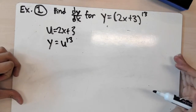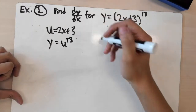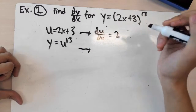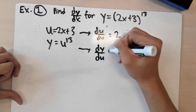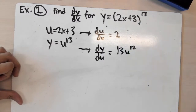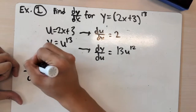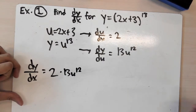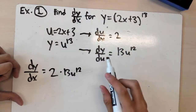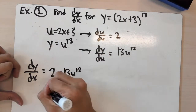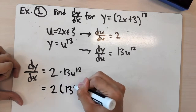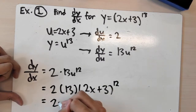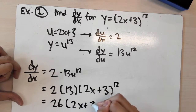We want to find the derivatives of both the inner and outer functions. So du/dx is equal to 2, while dy/du is equal to 13u to the 12th. Since chain rule is simply multiplying these two derivatives, we get 2 times 13u to the 12th. We substitute u back in as 2x plus 3, giving us 2 times 13 times (2x plus 3) to the 12th, which simplifies to 26(2x plus 3) to the 12th.